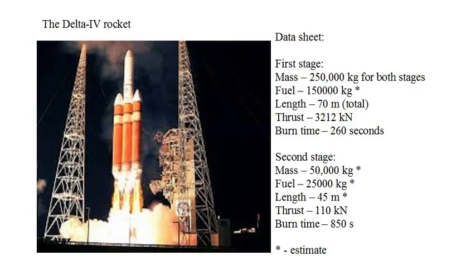I obtained the data for the rocket from the internet, but it was incomplete for our purposes, so I had to guess — let's say estimate — some values as indicated on the screen. Every rocket used for space launches uses two stages: a massive first stage to get the rocket off the ground and well out of the Earth's atmosphere, and a smaller second stage to propel the payload into space.